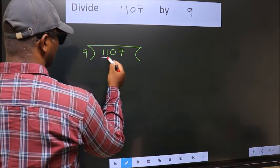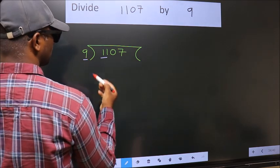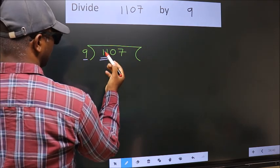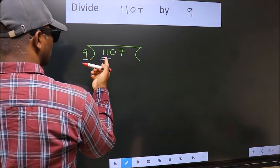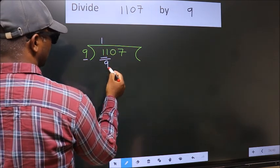Here we have 1. Here 9. 1 is smaller than 9, so we should take two numbers: 11. A number close to 11 in the 9 table is 9 once 9.